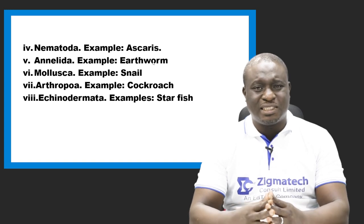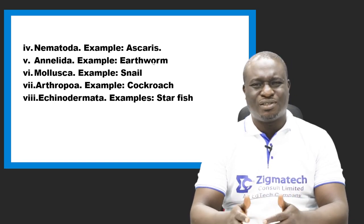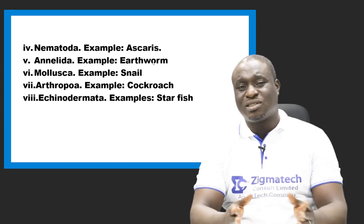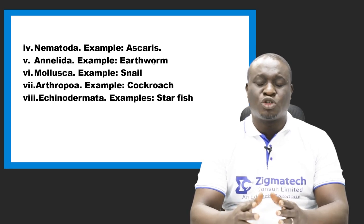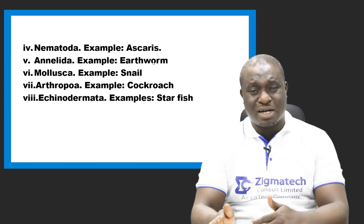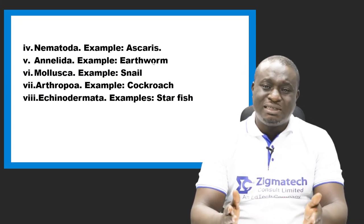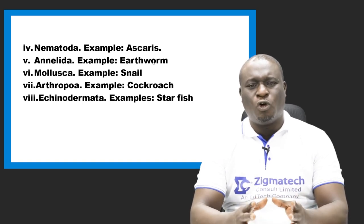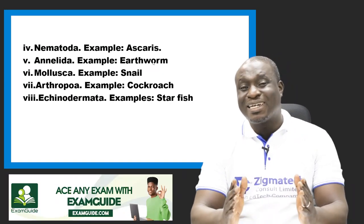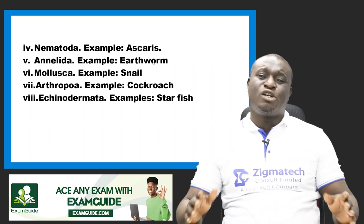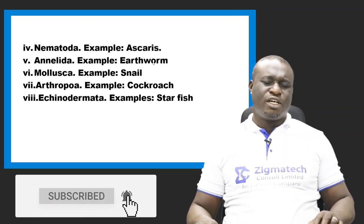Apart from Insecta, we have the Arachnids under Arthropoda. Arachnids include ticks, lice, scorpions, and spiders. Then we have the Myriapods, with two main examples: the chilopods — centipede and millipede. Finally, the eighth phylum of invertebrates is Echinodermata. Examples include the starfish, sea urchins, and sea cucumber.